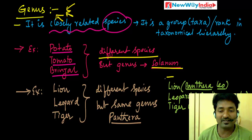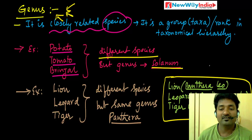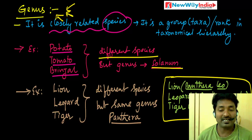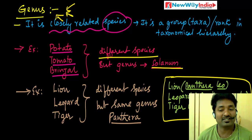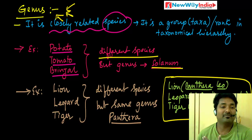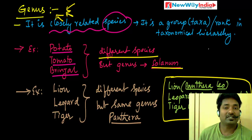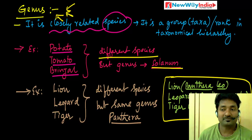Try to understand these scientific names from a competitive exam point of view. Lion is Panthera leo, Leopard is Panthera pardus, Tiger is Panthera tigris. These scientific names are important for competitive exams, so try to understand the entire concept.